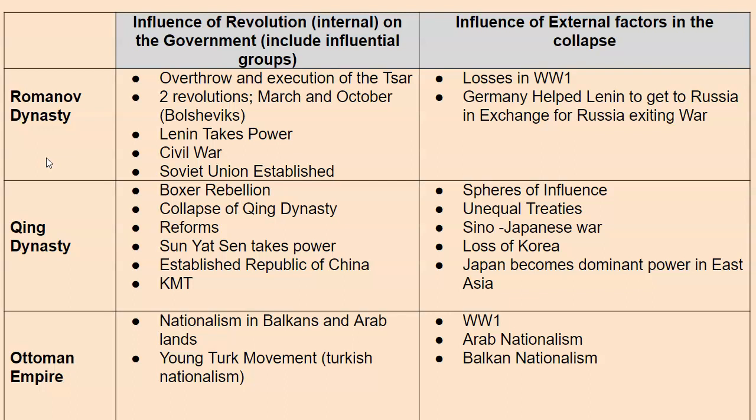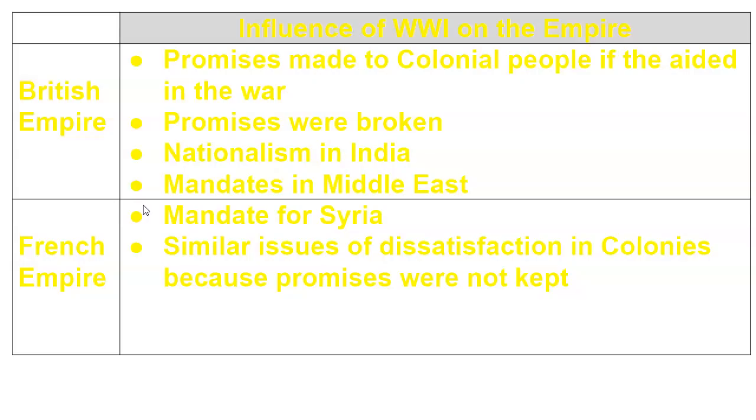The Ottoman Empire, which we've talked about extensively as being so big and strong, begins to crumble in the 19th century. A lot of that has to do with nationalism — both Turkish nationalism with the Young Turk Movement, but also nationalism among the conquered people in the European part of the Ottoman Empire in the Balkan territory, with the Slavs wanting self-determination and the Arabs wanting to break away from Turkish control. World War I is a major factor, along with the two kinds of nationalism, both north and south surrounding Turkey.